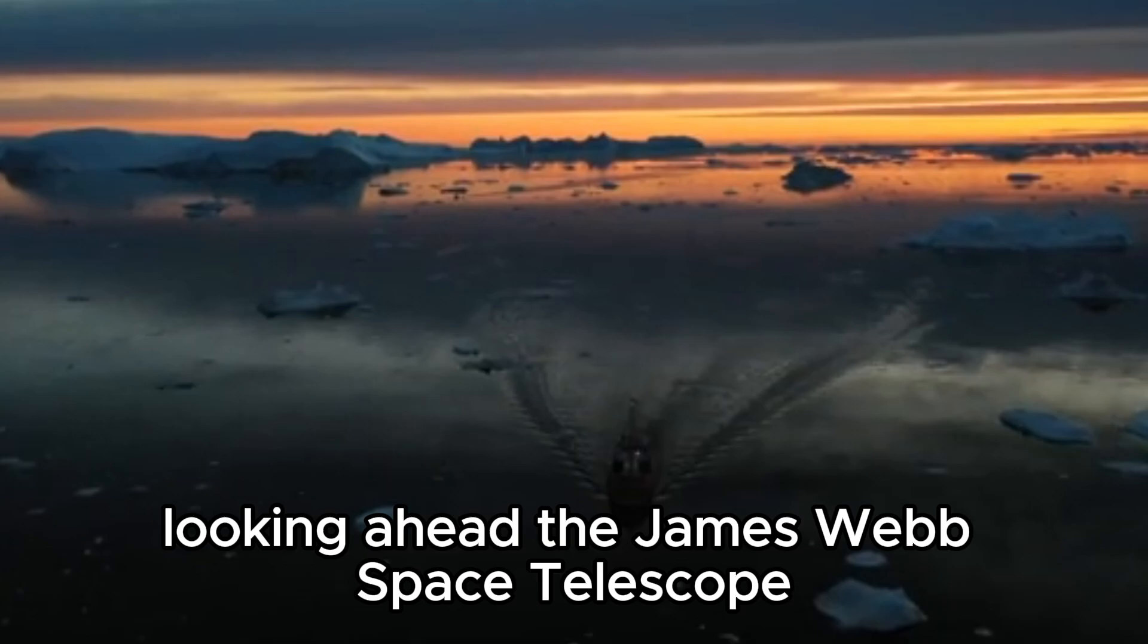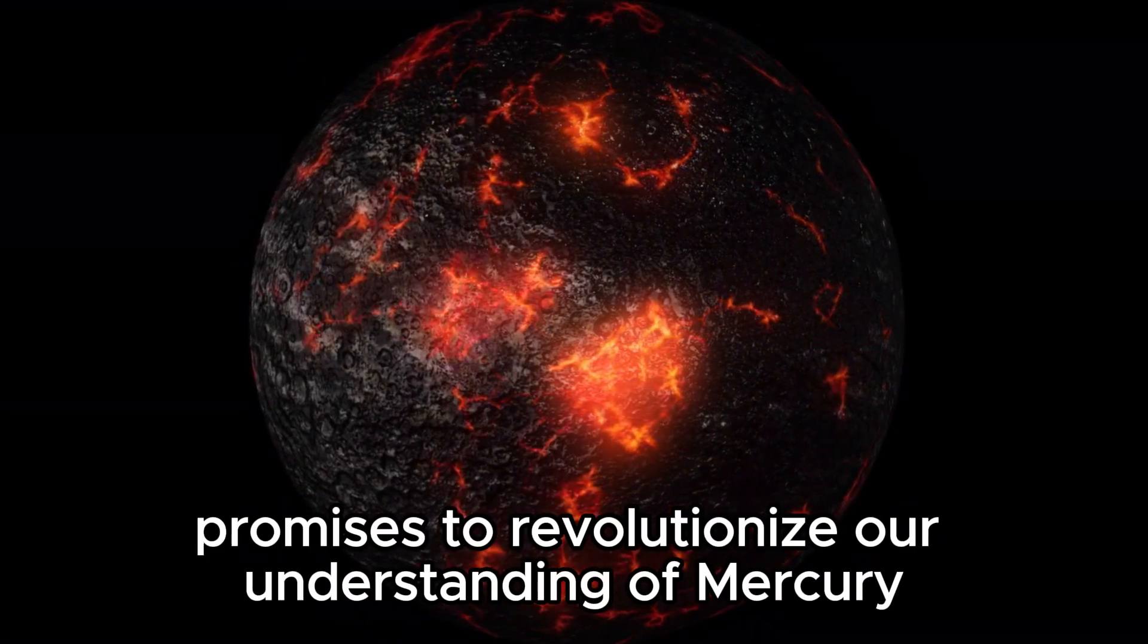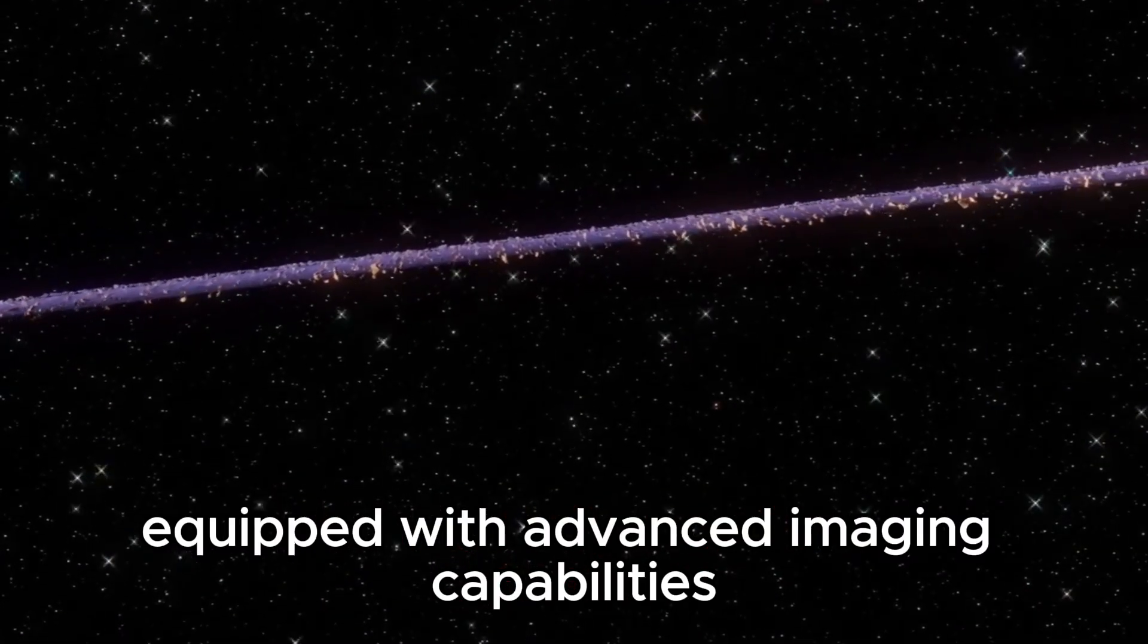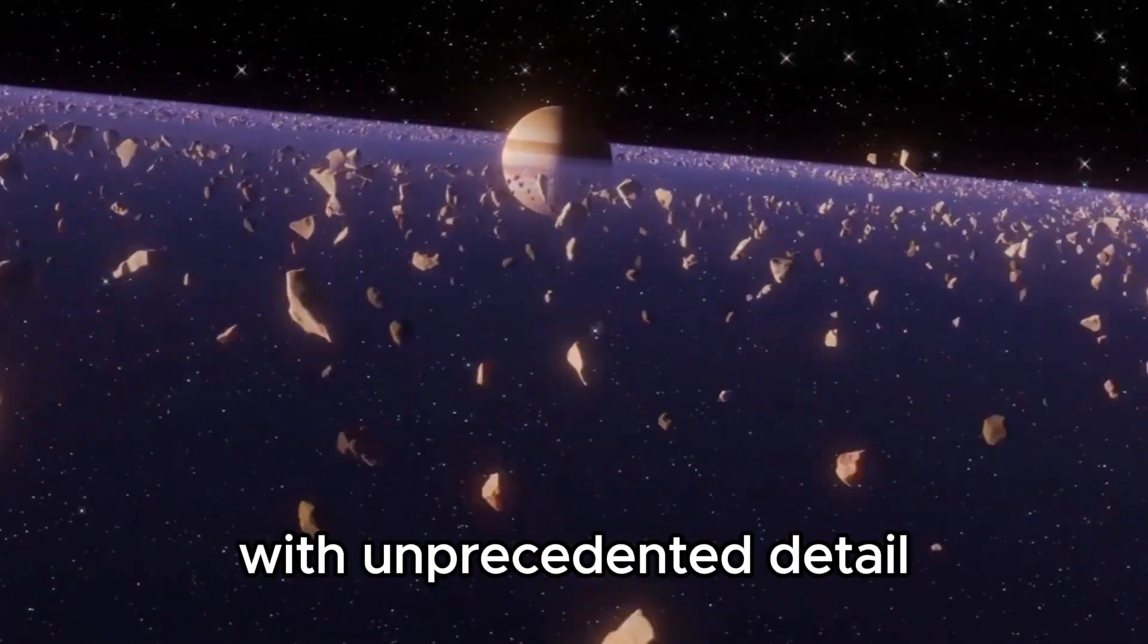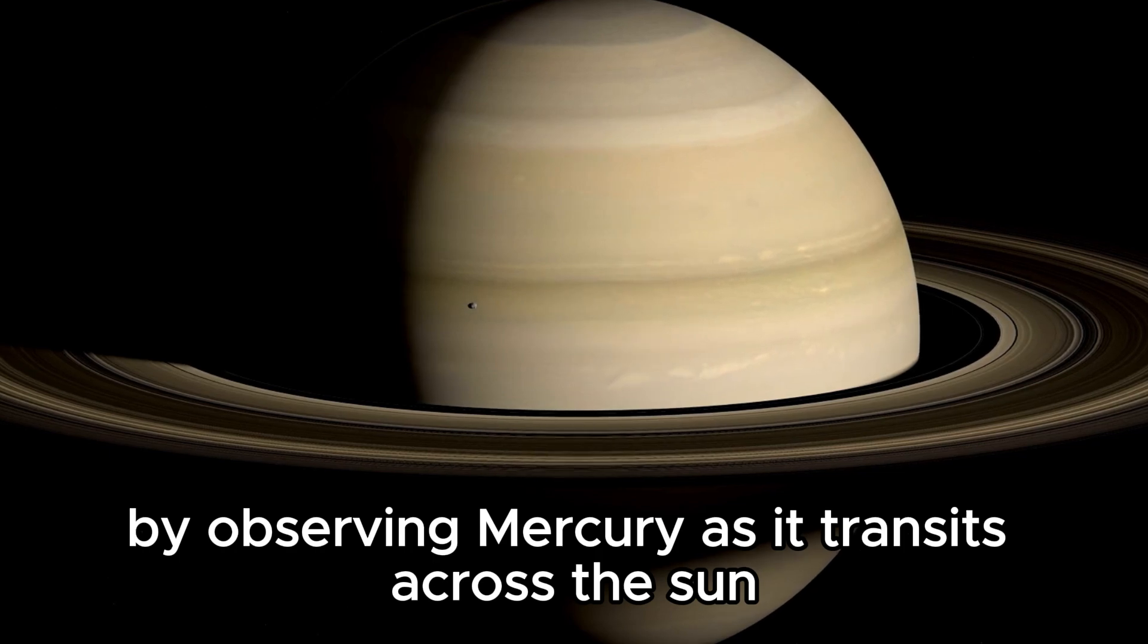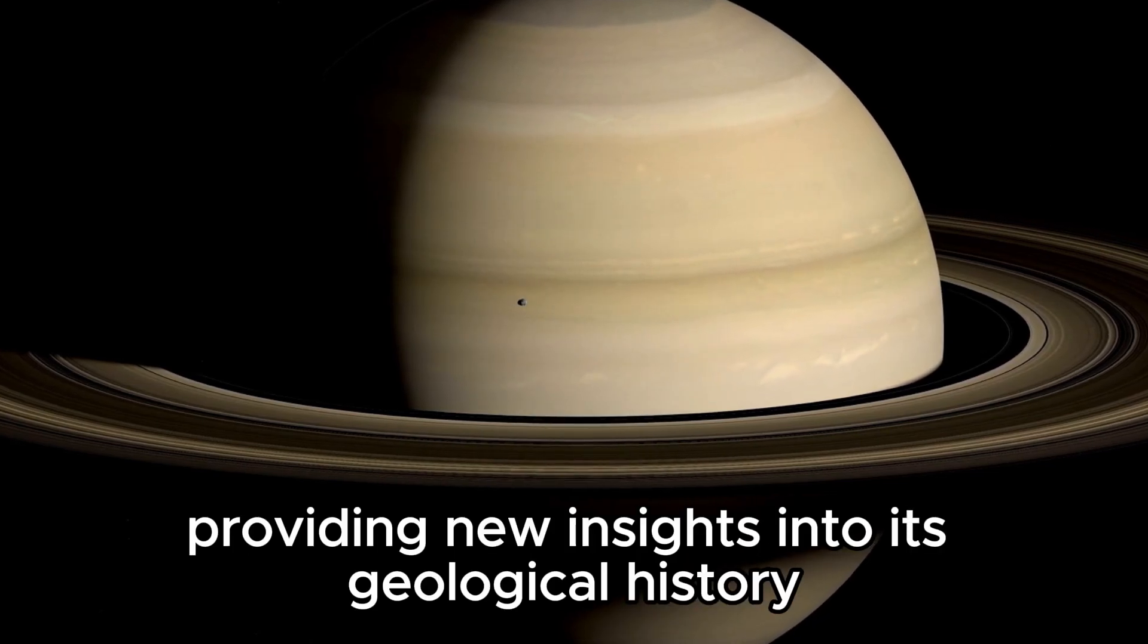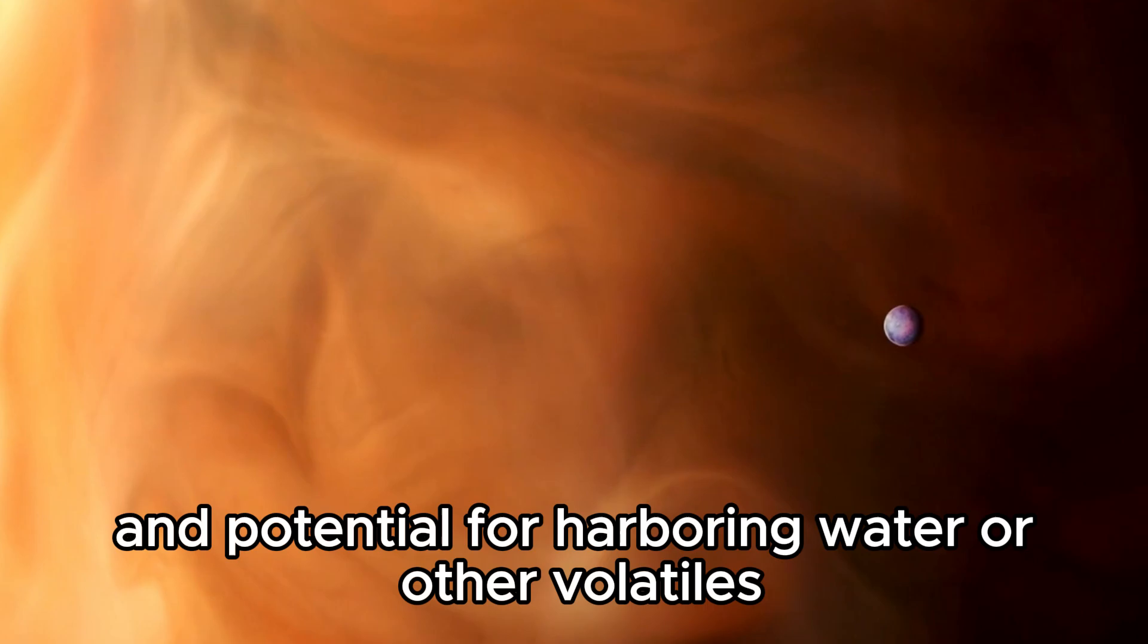Looking ahead, the James Webb Space Telescope, JWST, promises to revolutionize our understanding of Mercury. Equipped with advanced imaging capabilities, JWST will enable scientists to study Mercury's surface composition with unprecedented detail. By observing Mercury as it transits across the Sun, JWST will analyze the planet's atmosphere and surface features, providing new insights into its geological history and potential for harboring water or other volatiles.